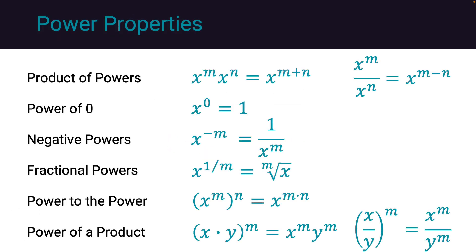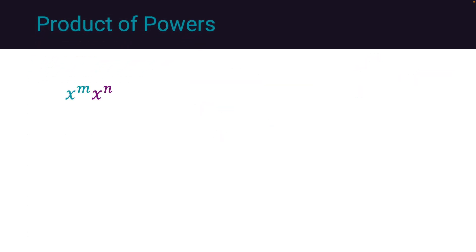Here is a list of properties for power functions. We will demonstrate how each property is derived. The product of powers is x to the power m times x to the power n. Expanding both terms,